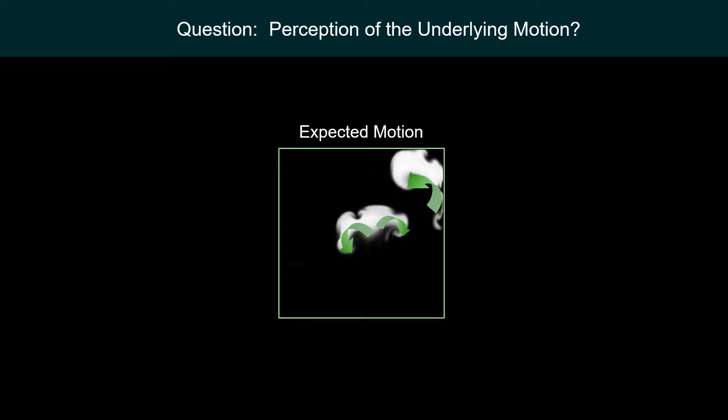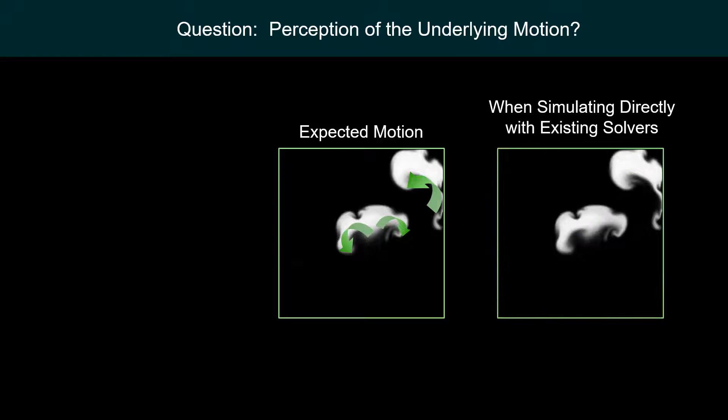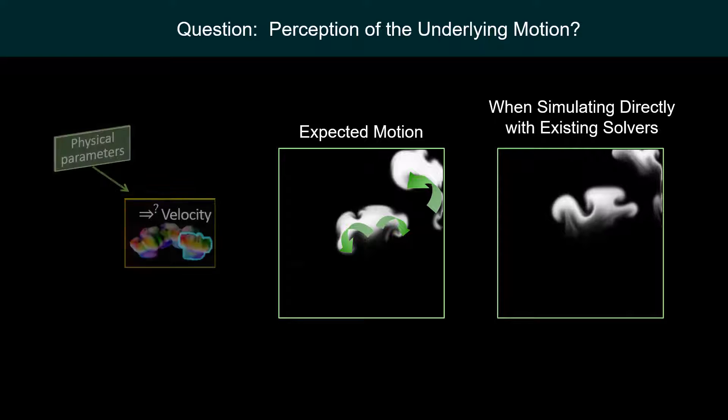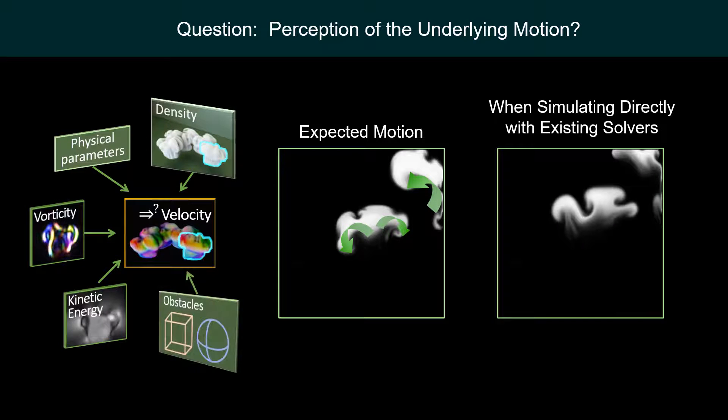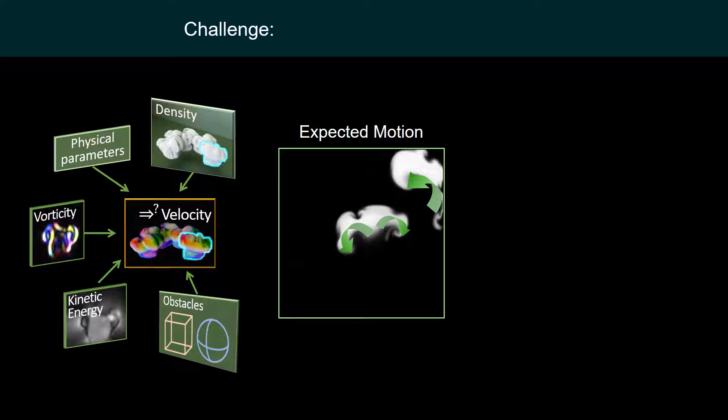However, we cannot get such a result following this expectation when simulating directly from this initial state with existing solvers. This is because solvers are purely based on abstruse physical parameters, while many entities like density, vorticity, kinetic energy, and obstacles have obvious semantic meanings. This poses an interesting challenge. Can we obtain a realistic motion following these controls?